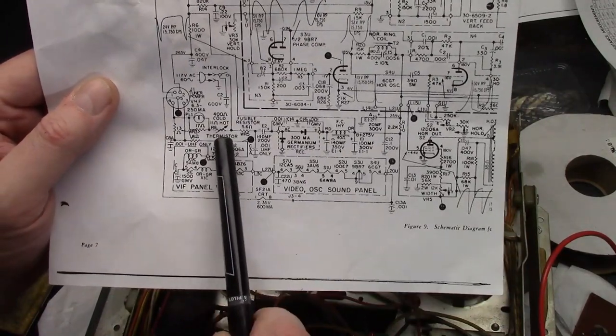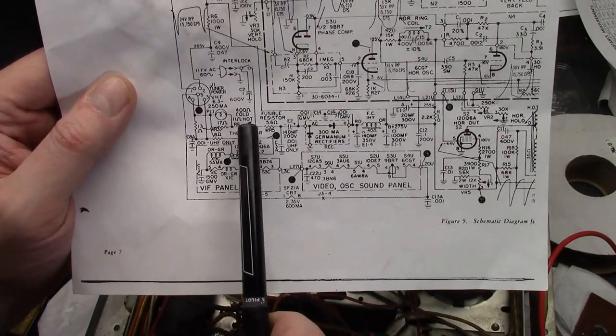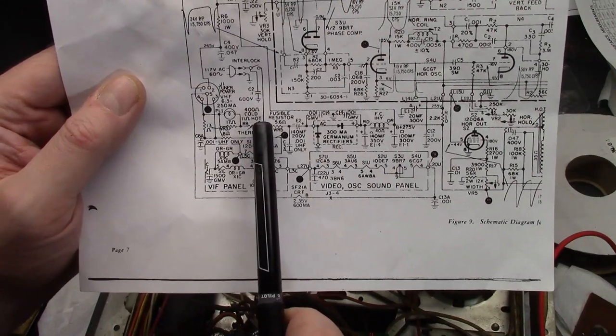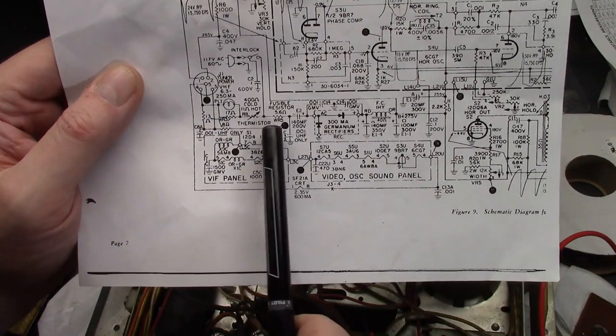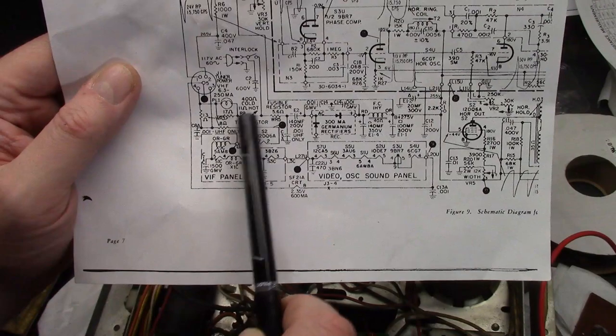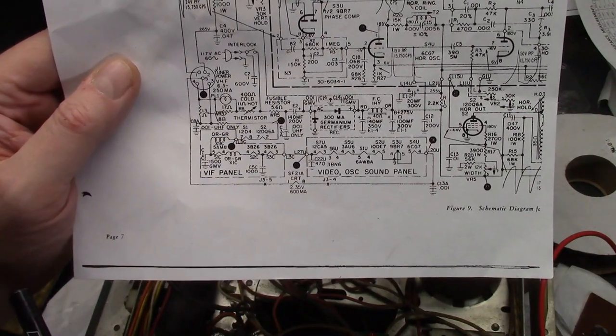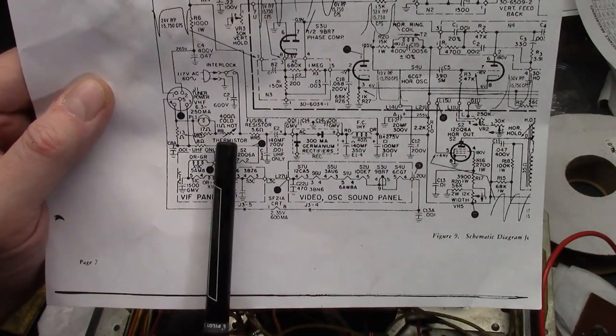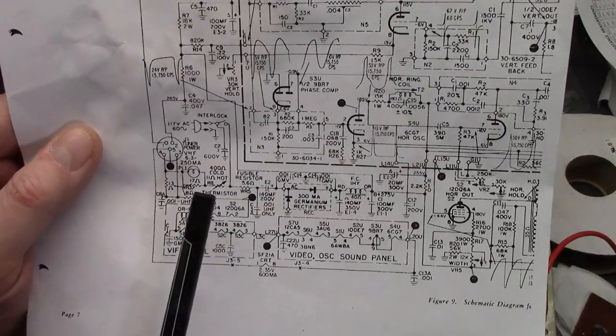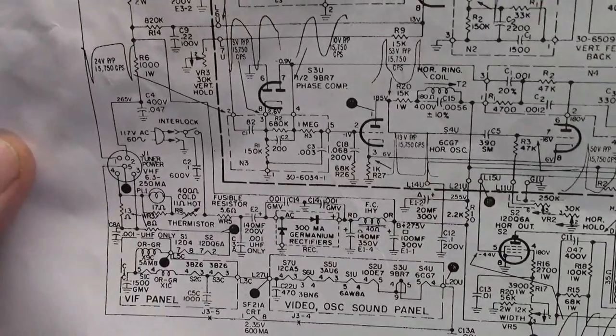So often you'll see me power these up with the fusible resistor taken out. That means there's no power going to the right side. It's only going to the left side, which is just the tube filaments. It's a good way to check that your basic wiring is sound before you try to power up the whole set. All right, what do we have right to the left of that? This thing that says 400 ohms cold, 11 ohms hot, thermistor, resistor symbol with a line through it.